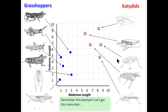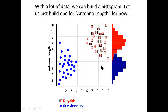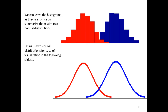So classifying examples — remember this example we already talked about. With lots of data, what we can do is build a histogram, and that can tell us about the frequency of antenna length and abdomen length. We can understand the two different classes of insects having a different frequency of distribution.